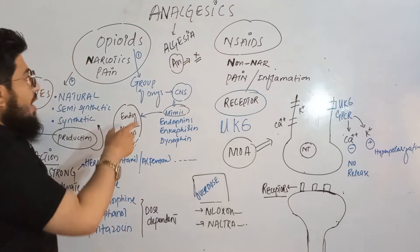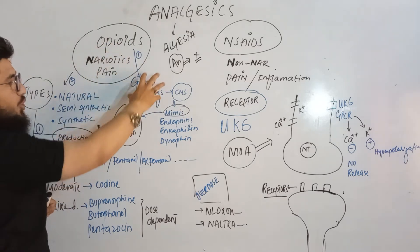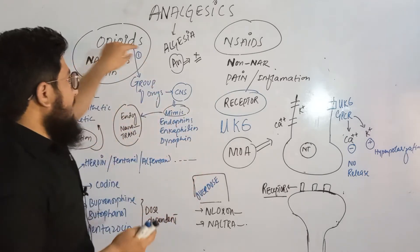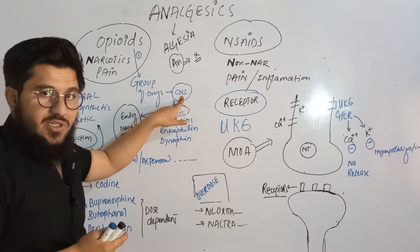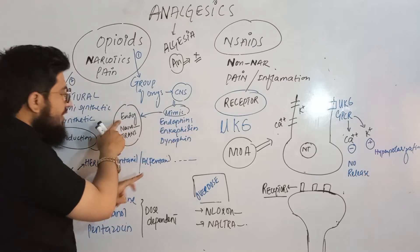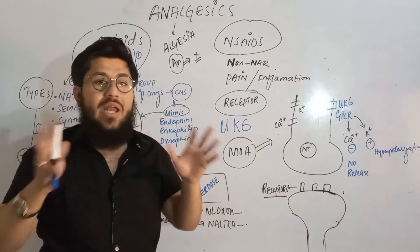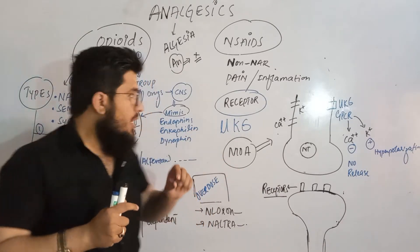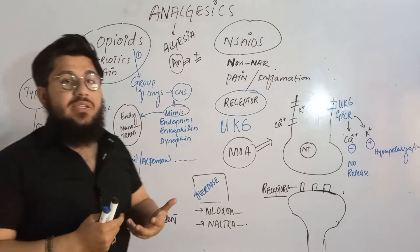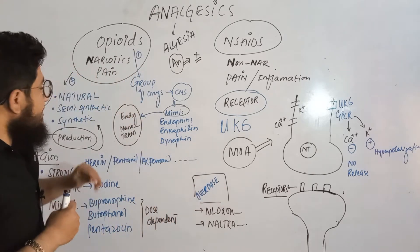The term opioids is used for a group of drugs. These opioids act on the central nervous system and mimic — or copy — endorphins, enkephalins, and dynorphins, which are endogenous neurotransmitters. These neurotransmitters help us feel easy, calm, relaxed, and happy. Opioid drugs similarly help us feel calm and relieve pain.